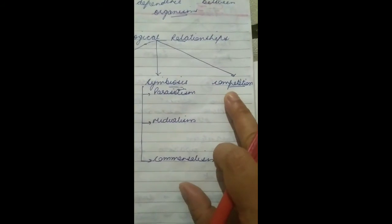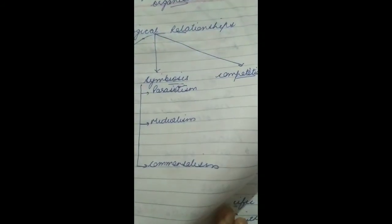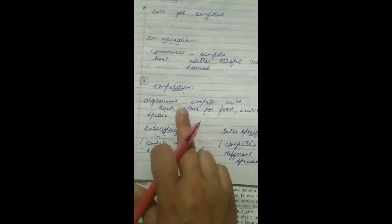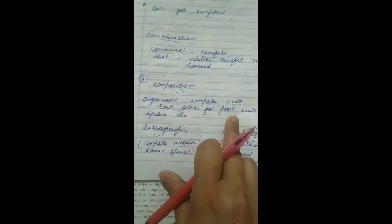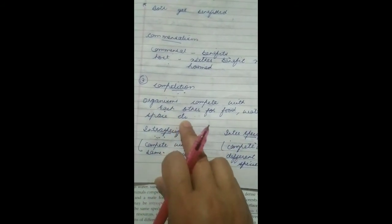Next type of ecological relationship is competition. In competition, organisms compete with each other for food, water, space, air, and light. There are two types of competition: intraspecific and interspecific.